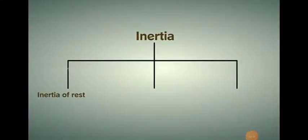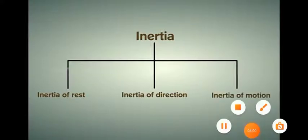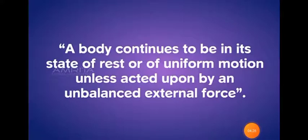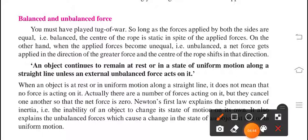Inertia has three types: inertia of rest, inertia of direction, and inertia of motion. Inertia is the ability of an object to resist a change in its state of motion on its own. Newton's first law also explains how unbalanced forces cause a change in the state of an object at rest or in uniform motion. We can state: an object continues to remain at rest or in a state of uniform motion along a straight line unless an external unbalanced force acts on it. This is Newton's first law of motion.